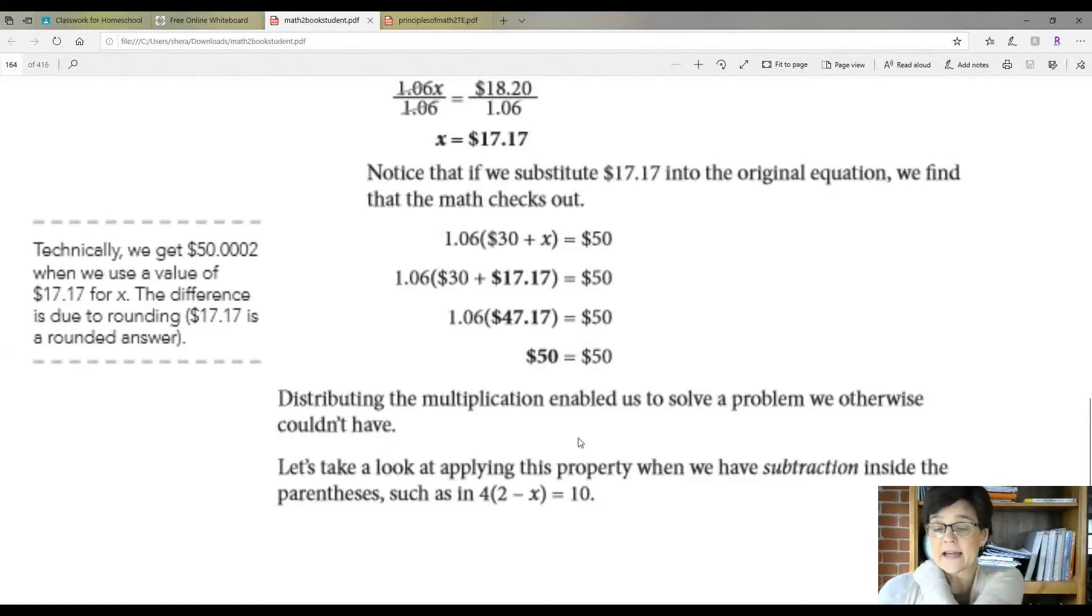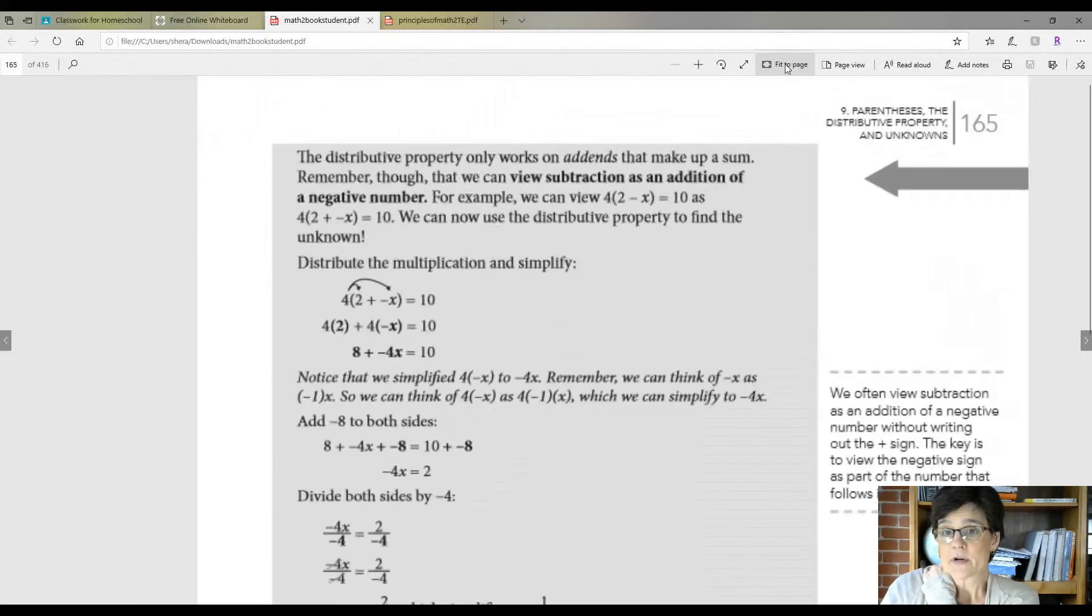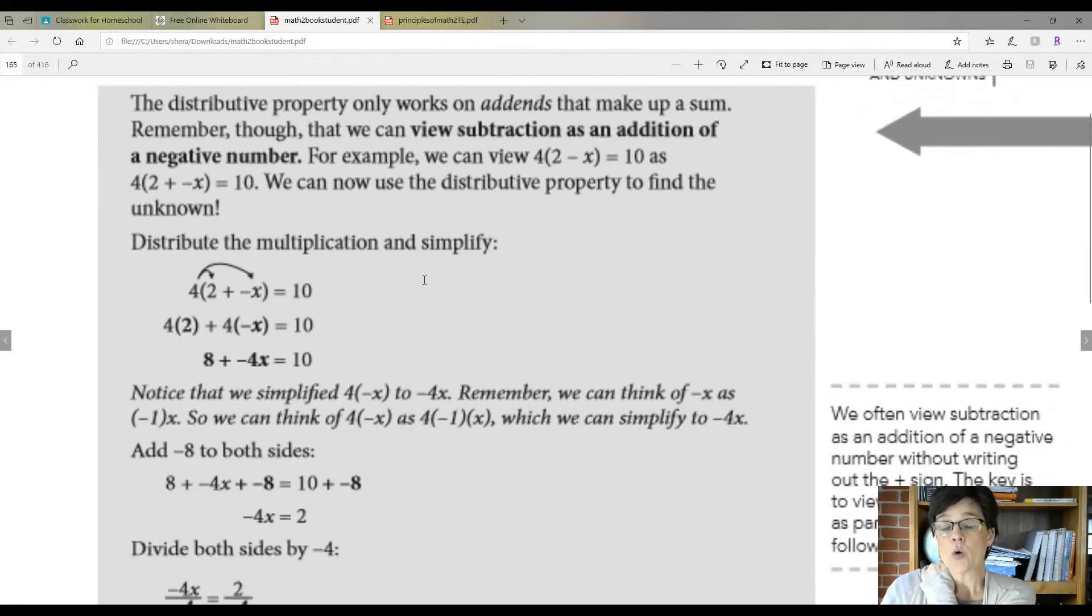Now we're going to take a look at applying this property when you've got subtraction inside the parentheses, such as a problem like this: 4 times (2 minus X) equals 10. Let's take a look at this right up here at the top. The distributive property only works on addends that make up a sum. So addends, remember, they can go either way. It doesn't matter which way you put them. But in subtraction, that's not true. Remember, though, that you can view subtraction as an addition of a negative number.